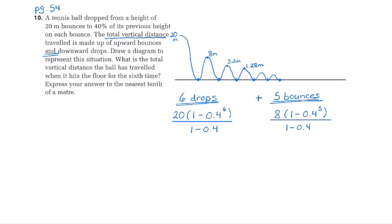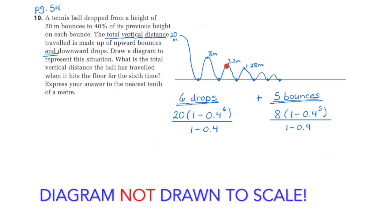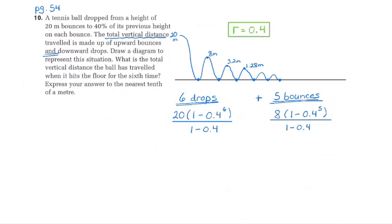To conclude, we look at an application question from the textbook. A tennis ball drops from a height of 20 meters, and each time it bounces it reaches 40% of its previous height. So 20 times 0.4 gives 8 meters, then 3.2 meters, and so on — the common ratio is 0.4. We're looking for the total vertical distance traveled when the ball hits the floor for the sixth time. Vertically, there are 6 drops and 5 bounces — if we add together the drops and the bounces, we get the total vertical distance traveled.